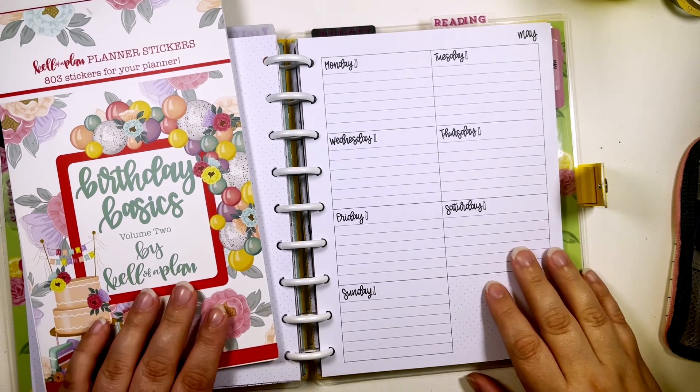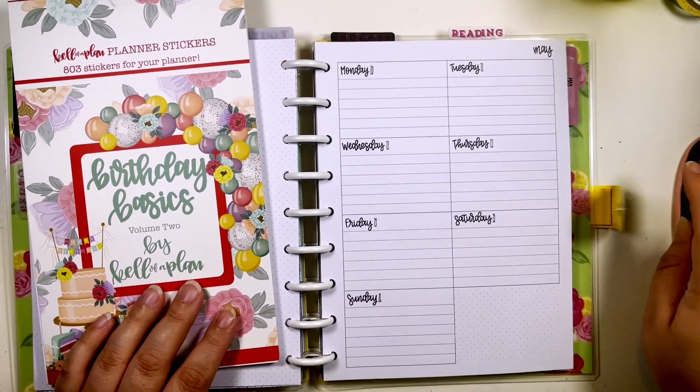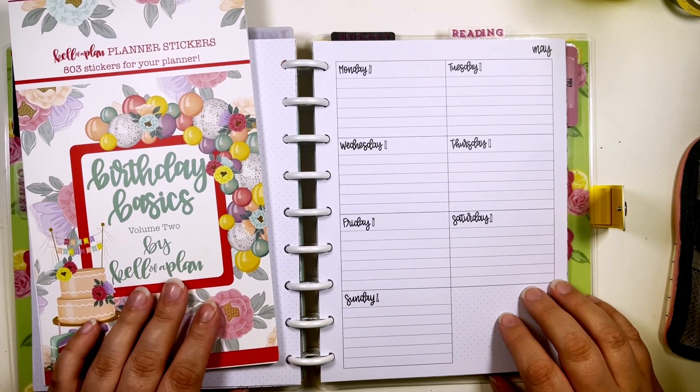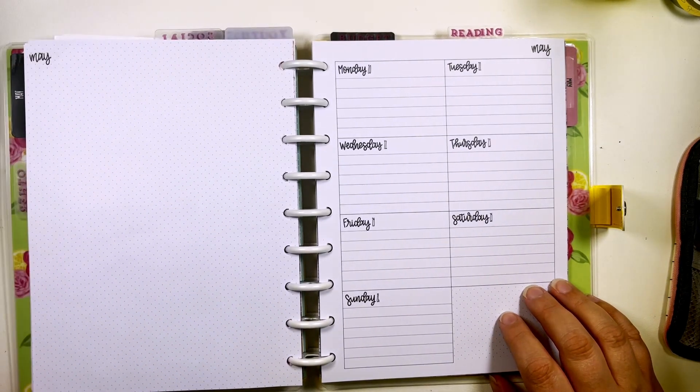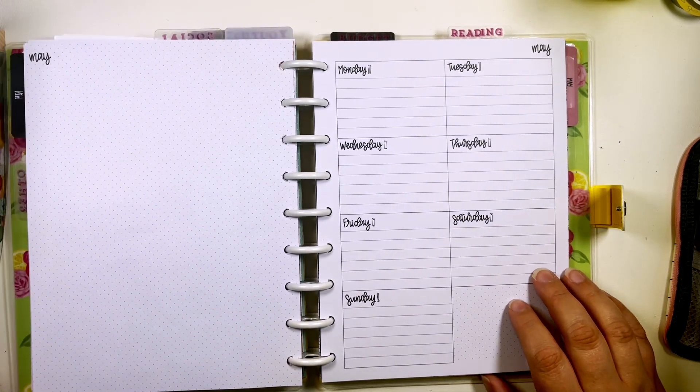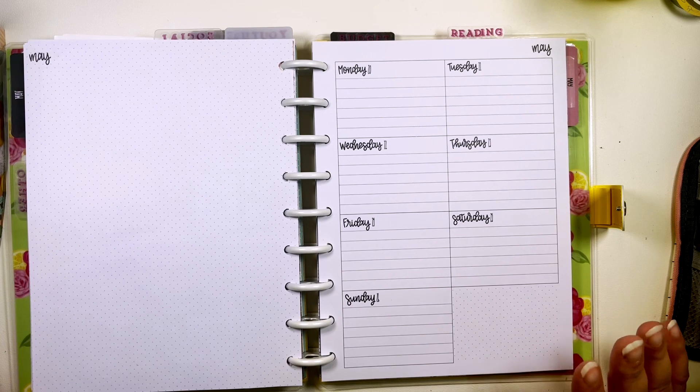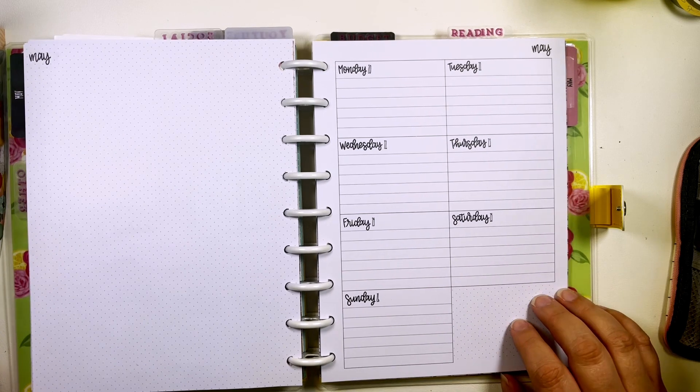Hi my name is Chelsea, welcome back to my channel. This is Be Sweet Stand Tall and Plan. Today I'm gonna be planning in my classic dashboard Caliber planner for the week of Monday May 20th through Sunday May 26th.